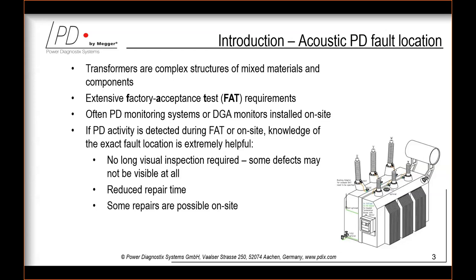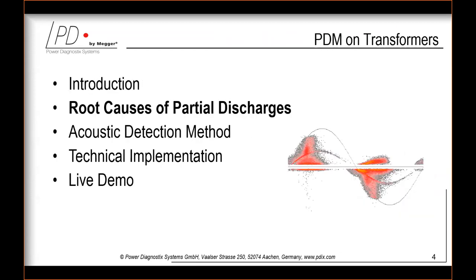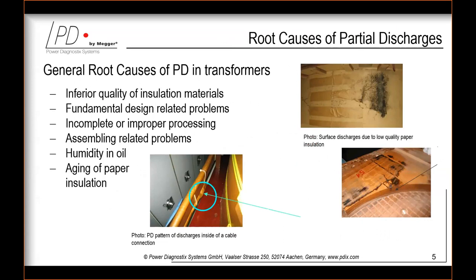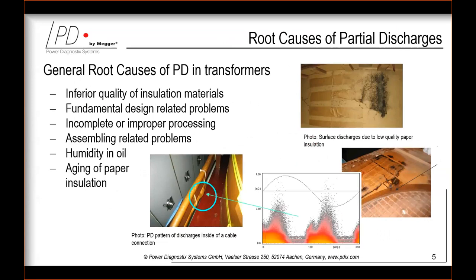Knowing the fault location reduces the need for lengthy visual inspection, since some defects may not be visible at all. This can reduce repair time, and sometimes repairs are even possible on site. The root causes of partial discharges in transformers are usually related to inferior quality of insulation materials, fundamental design problems, incomplete or improper processing, assembly problems, humidity in oil, or aging of the paper insulation.